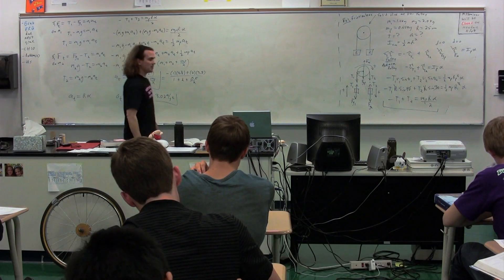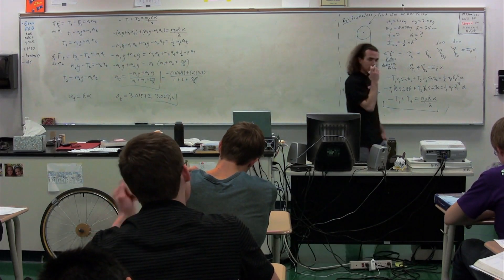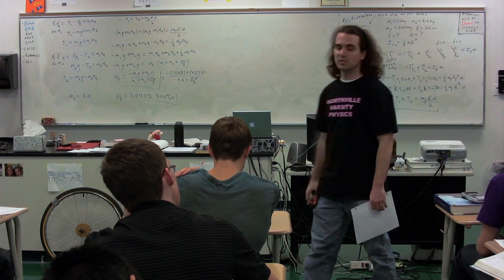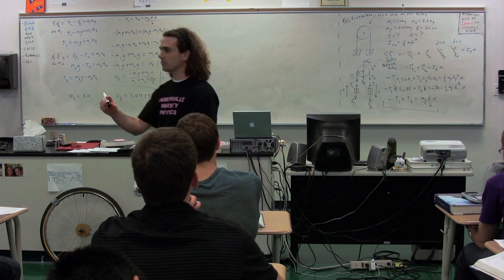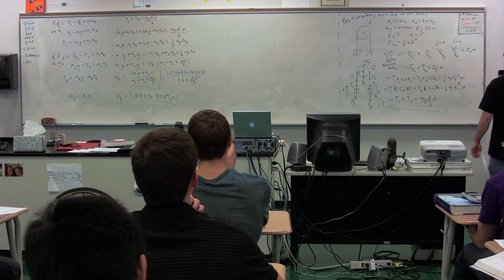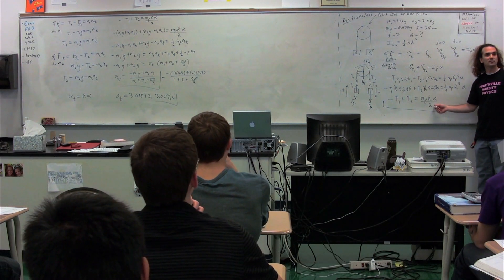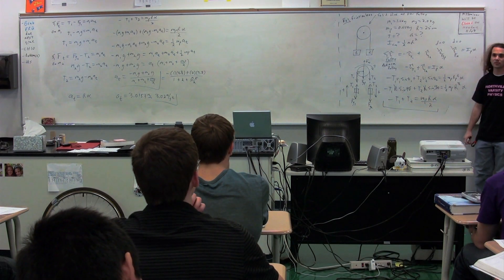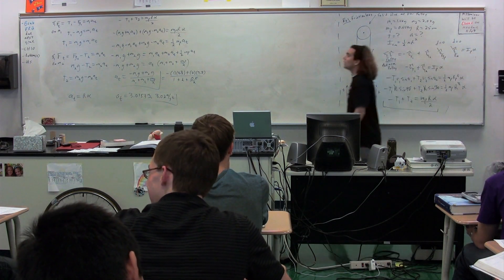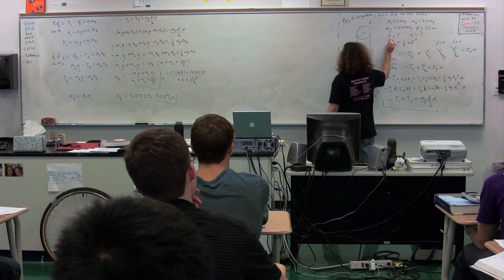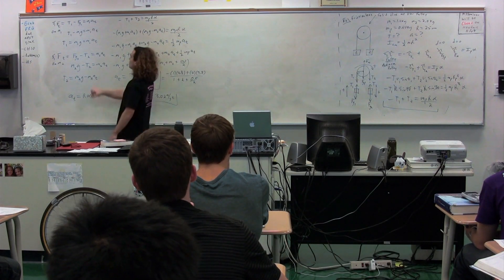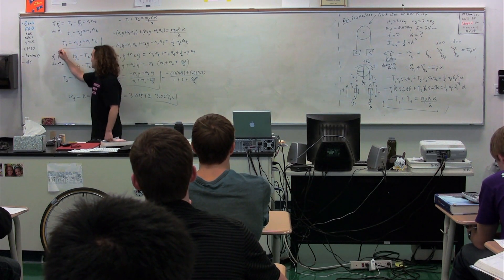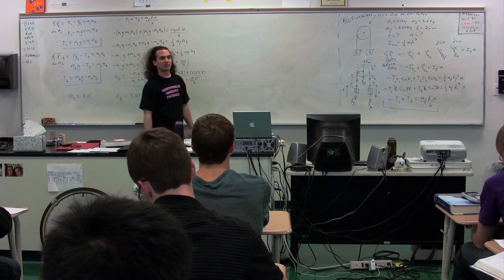Now I want to point something out. Tension one would equal tension two if the pulley were massless — then the mass of the pulley term goes to zero and tension one equals tension two. Part of this question was to find the two tensions; you would just plug the numbers into the expressions we derived for tension one and tension two. That would be relatively easy to do.